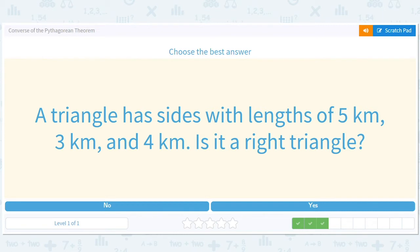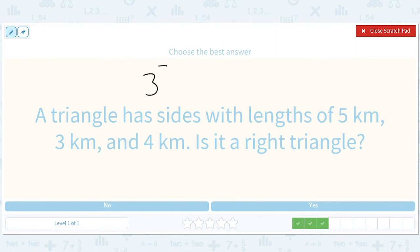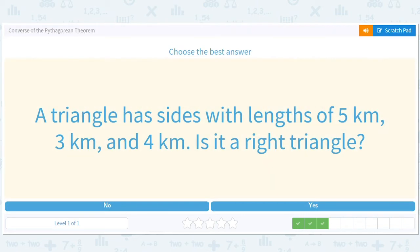We know 3-4-5 triangles are right, so let's go ahead and use the formula. 3 squared plus 4 squared equals 9 plus 16 equals 25, which does equal 5 squared.